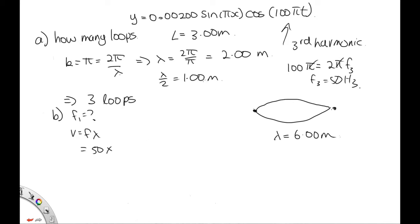So this is 50. And the wavelength, we've said, is equal to 2 meters. So the velocity is 100 meters per second. So the velocity will be the same for the fundamental frequency as well. So f₁ will be v over the wavelength, which is 100 over 6. So that is equal to 16.7 hertz.